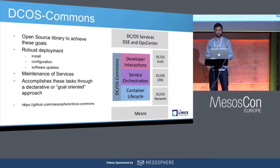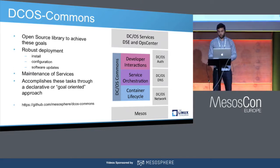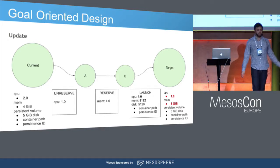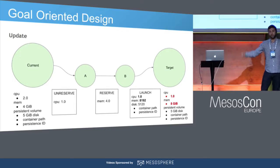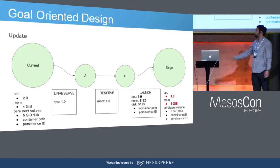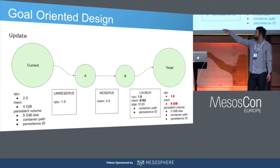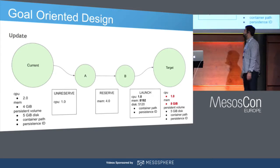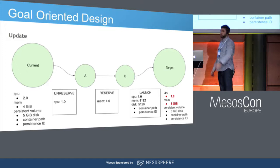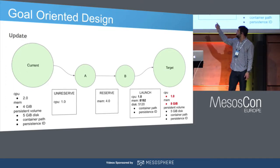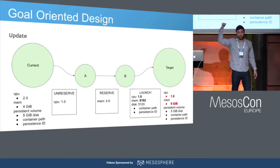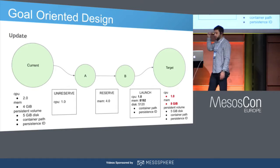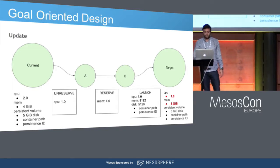DCOS Commons accomplishes these tasks through a declarative goal-oriented approach. It operates with two states — the current state and the target state. For example, if we're starting with CPU 2 and memory 4 gigs and we want to get to CPU 1 and memory 8 gigs, the scheduler knows to unreserve one CPU and reserve an additional four gigs of memory, then communicate with the DSE scheduler to launch a new node with the DSE-specific configuration values to achieve that target goal.